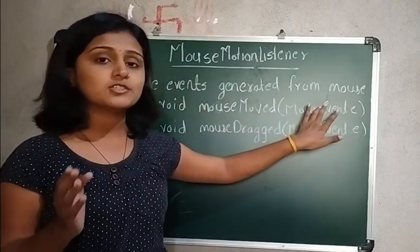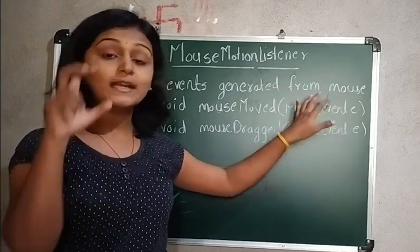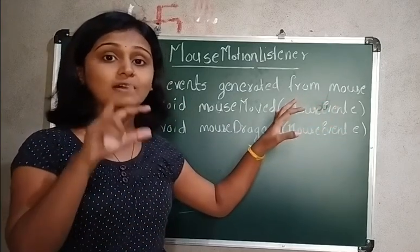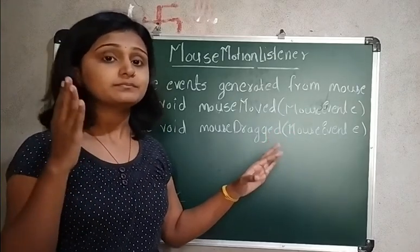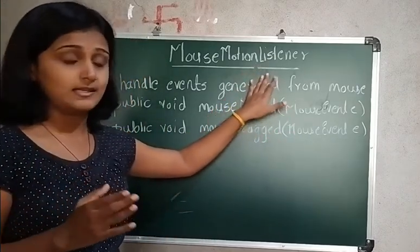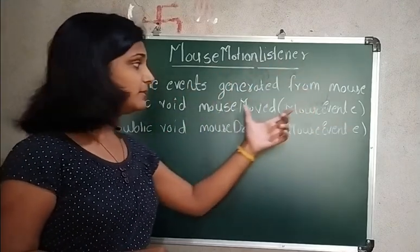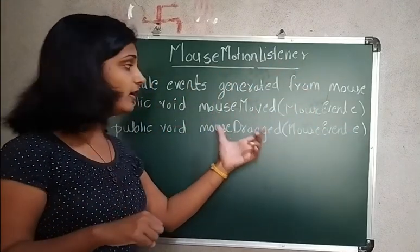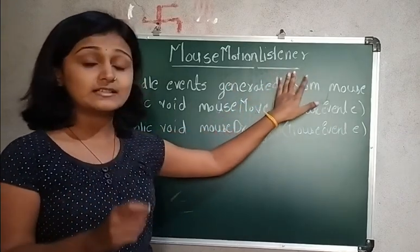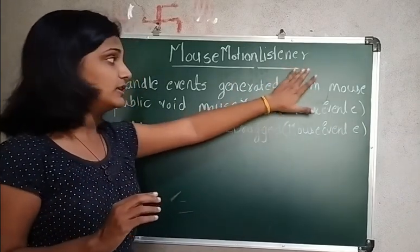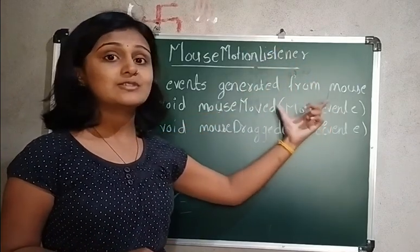With MouseListener, events were generated depending upon arrow or click. But with MouseMotionListener, events will be generated from the mouse whenever your mouse is moved or dragged. Depending upon that, you have to use and implement this MouseMotionListener. Obviously, the event here will be MouseEvent.